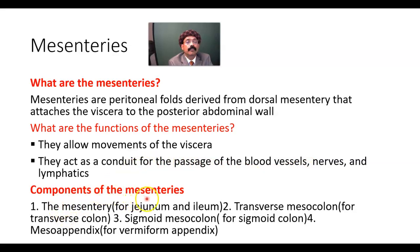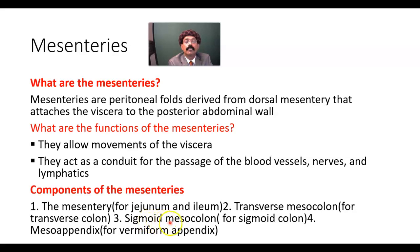The components of mesenteries include: the mesentery for the jejunum and ileum, called the mesentery; the mesentery for the transverse colon, called the transverse mesocolon; the mesentery for the sigmoid colon, called the sigmoid mesocolon; and the mesentery for the vermiform appendix, called the mesoappendix.